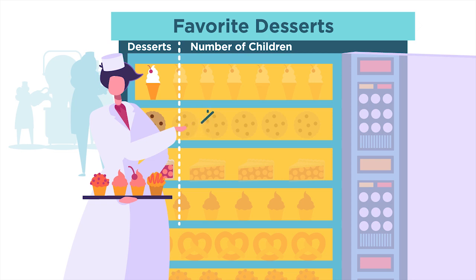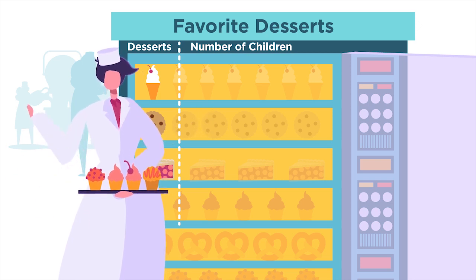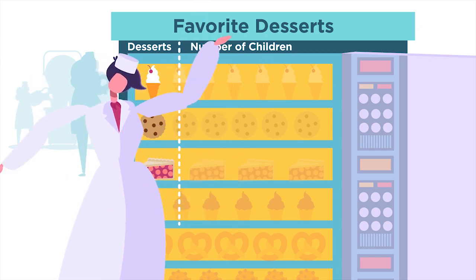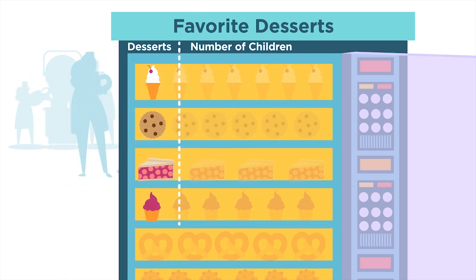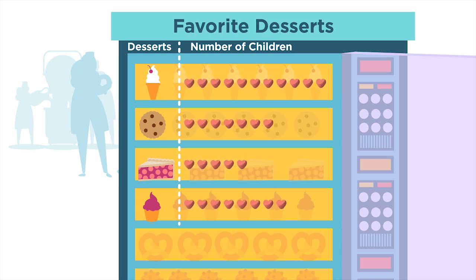The same information can be shown on another type of graph called a pictograph. Instead of using tally marks or numbers, a pictograph uses pictures to display data. This pictograph uses a heart to represent each vote.